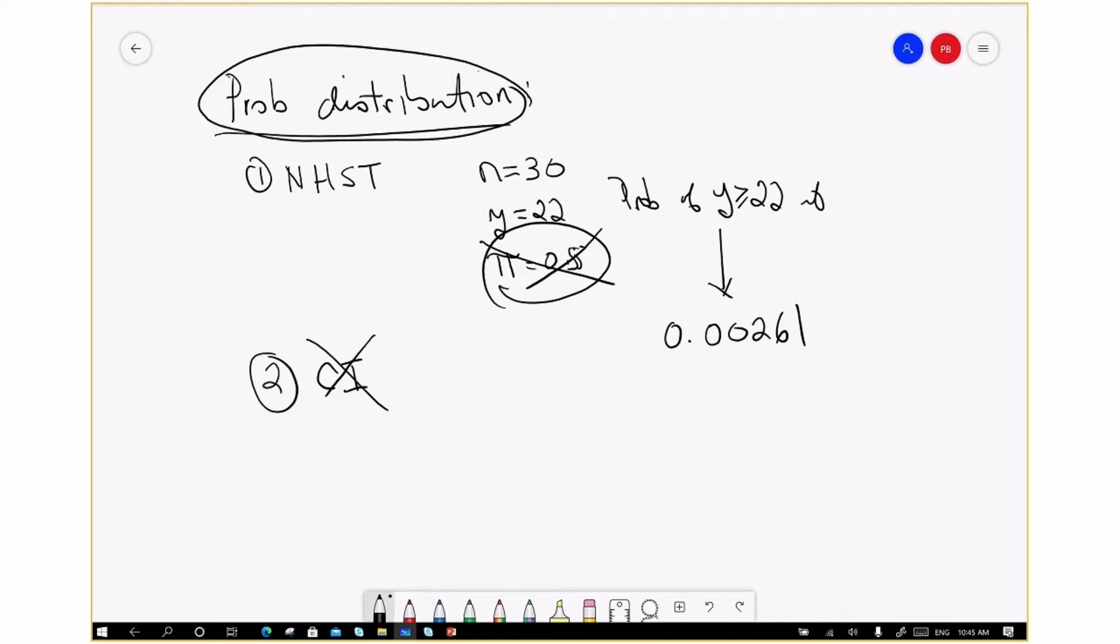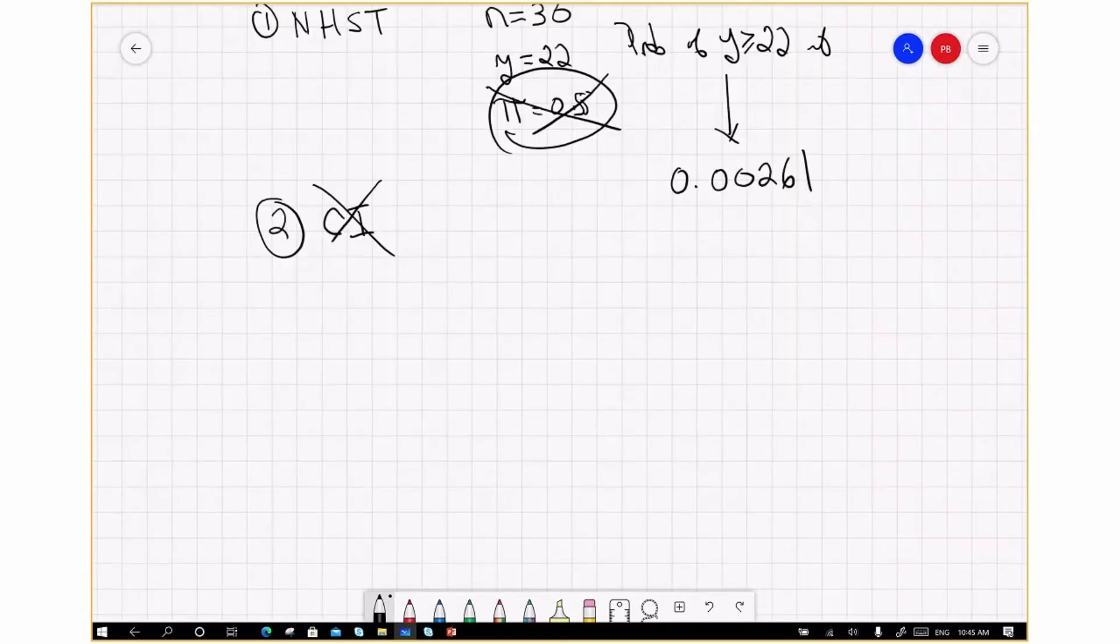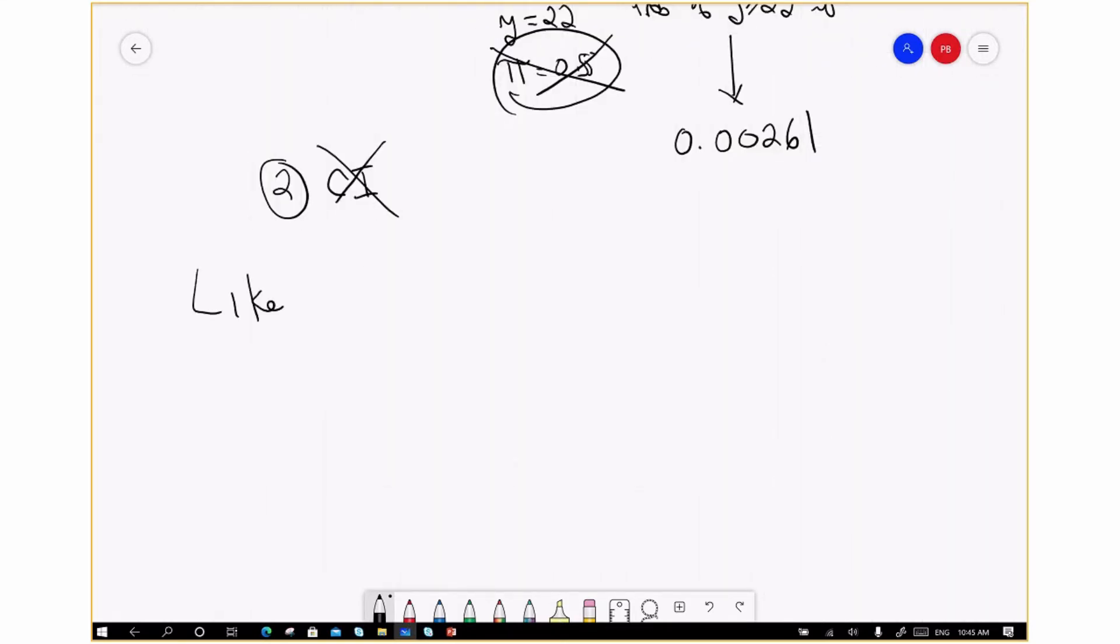What are some of the fun things we can do with likelihood functions? That's what I really want to focus on, because this is a section on likelihoods. What sort of neat things can we do with that?